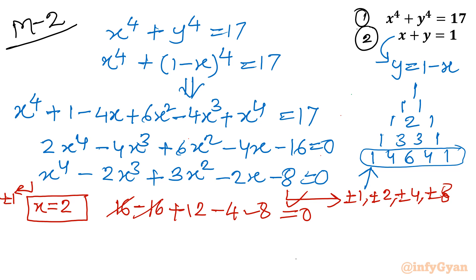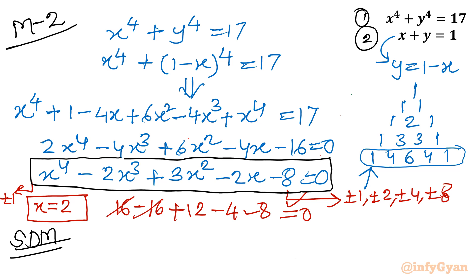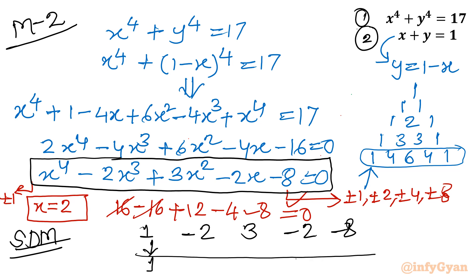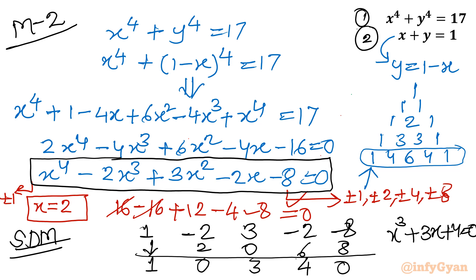Using synthetic division with x = 2 and coefficients 1, −2, 3, −2, −8: we get 1, 0, 3, 4 with remainder 0. So the quartic reduces to the cubic x³ + 3x + 4 = 0. We can factor this by splitting 3x as 4x − x: x³ − x + 4x + 4 = 0, giving x(x² − 1) + 4(x + 1) = 0. Using difference of squares: x(x+1)(x−1) + 4(x+1) = 0, so (x+1)(x(x−1) + 4) = 0, which is (x+1)(x² − x + 4) = 0.